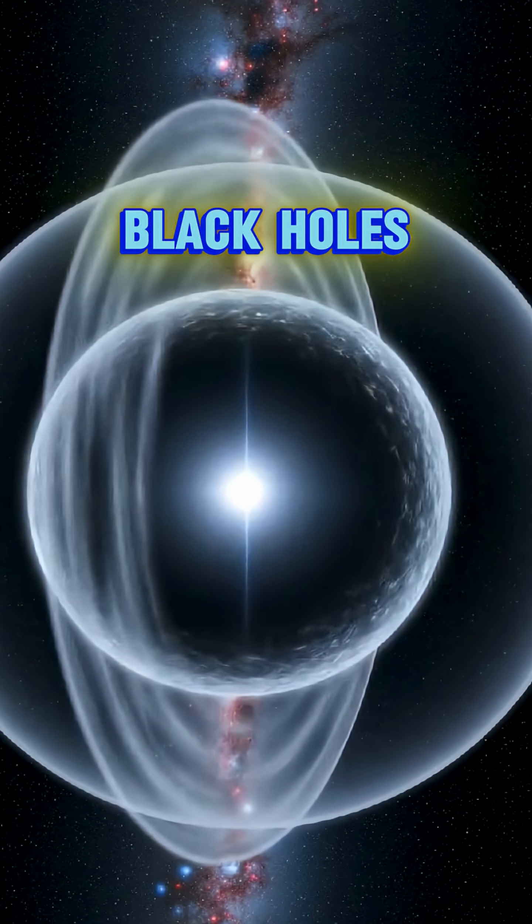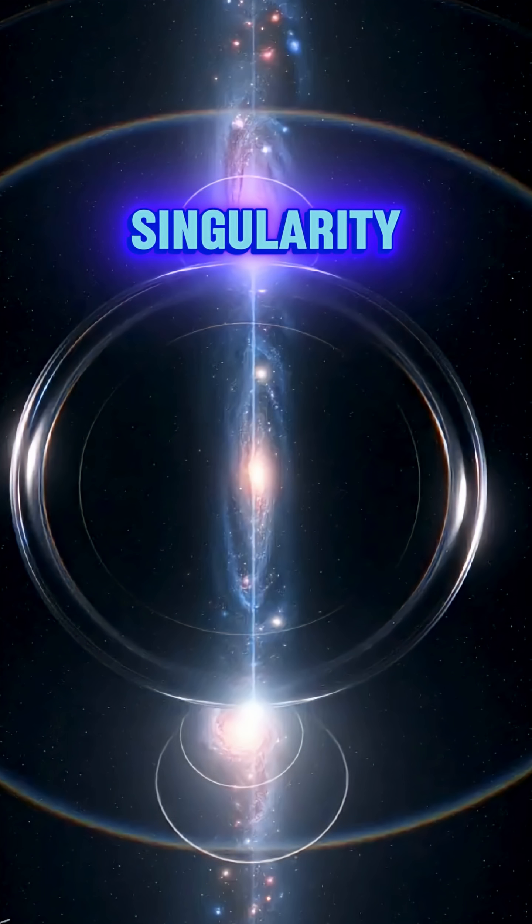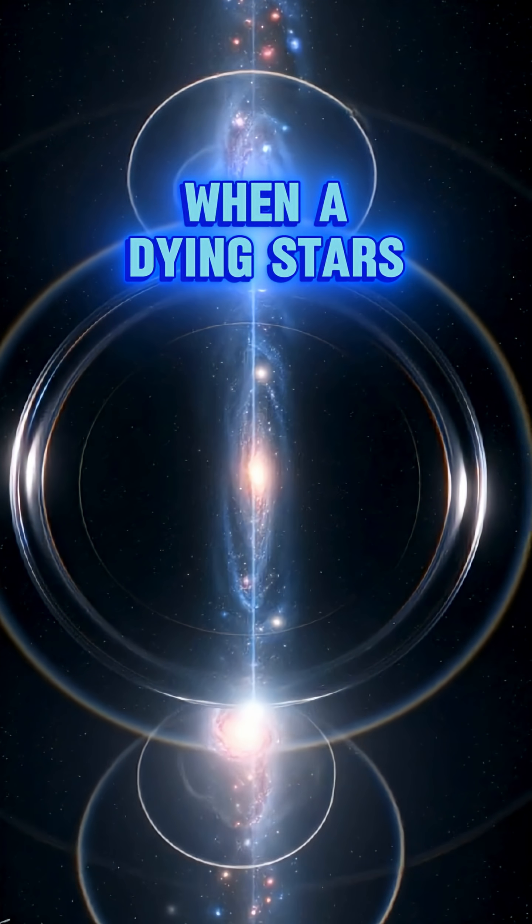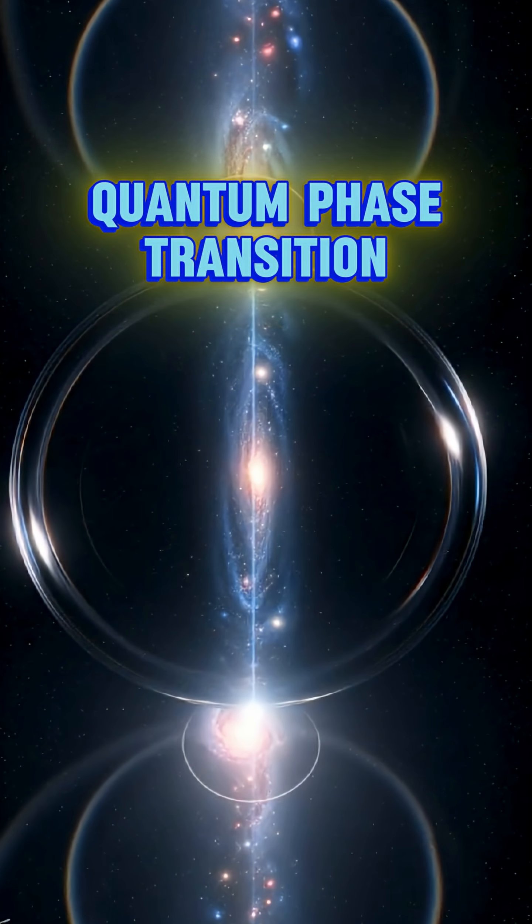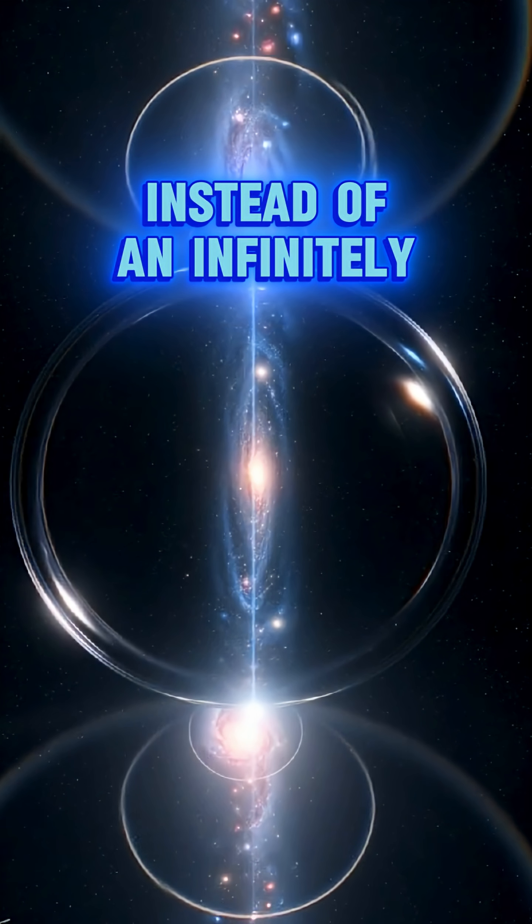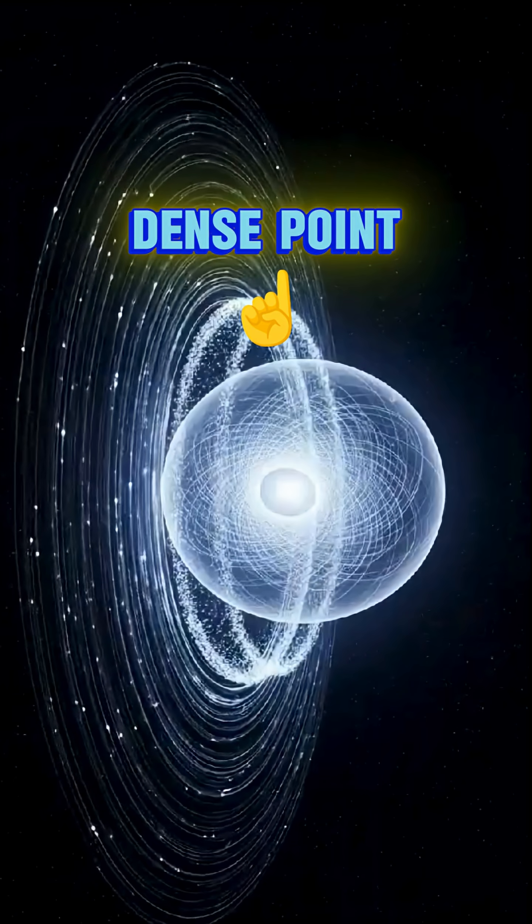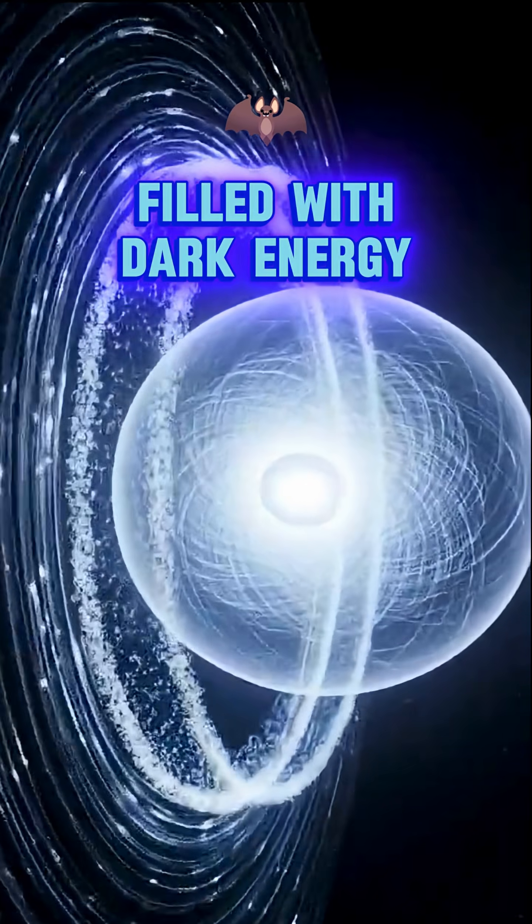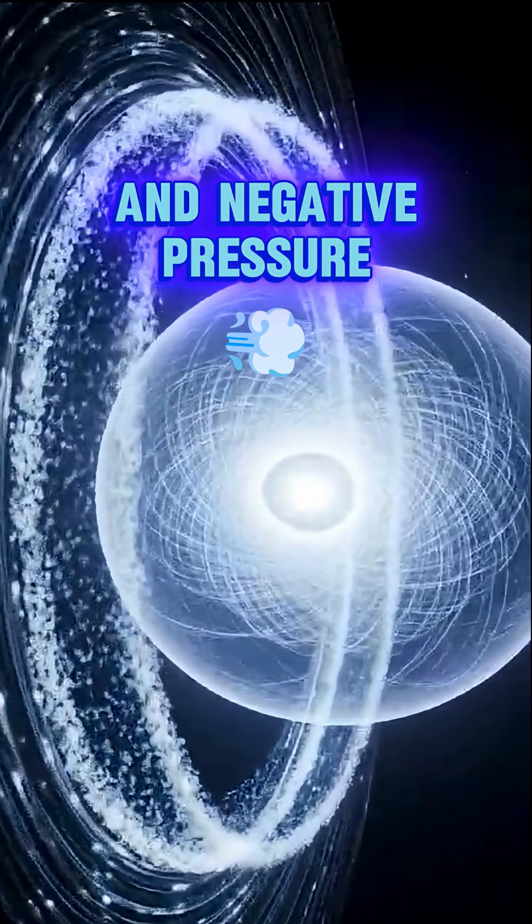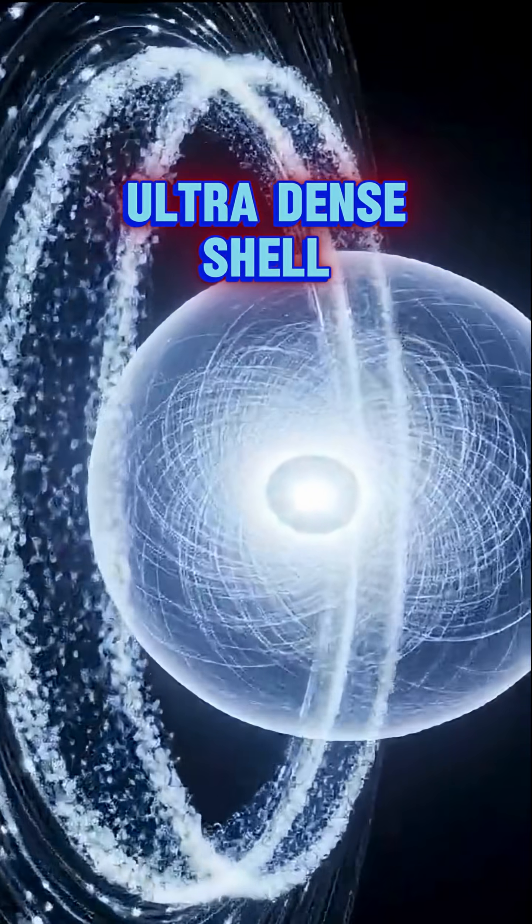Unlike traditional black holes that collapse into a singularity, gravistars might form when a dying star's collapse is halted by a quantum phase transition. Instead of an infinitely dense point, you get a core filled with dark energy and negative pressure, all enclosed by an ultra-dense shell.